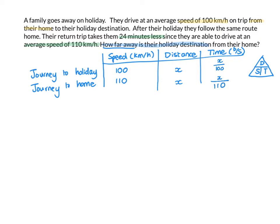Now, I've got all these situations here shown in this table. But I haven't yet used the fact that on the way back, it's 24 minutes less. So, let's see. If I've got the time to holiday, I'll have to subtract 24 minutes from that to get my time to return home.